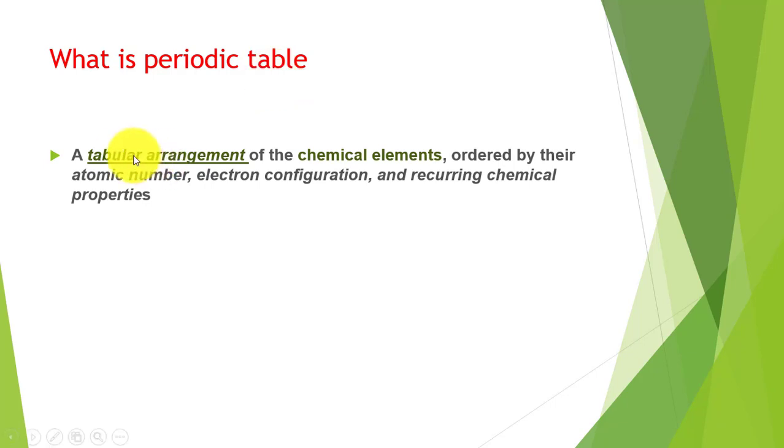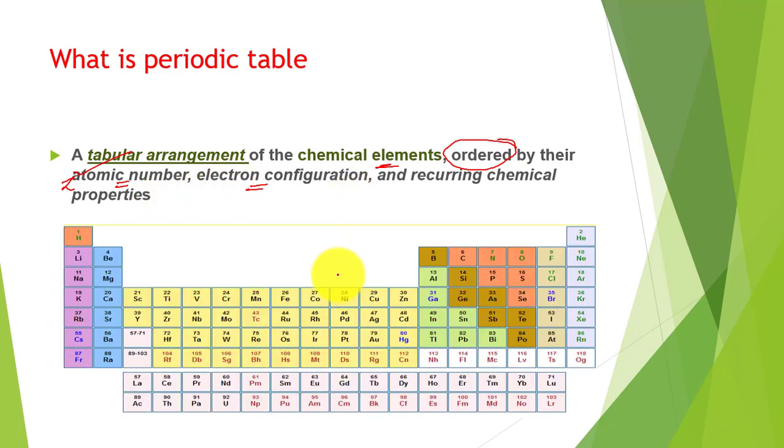What is the definition of periodic table? It is a tabular arrangement of chemical elements and they are ordered - ordered means how they are arranged, what factor was taken - by their atomic number. By now you should know what atomic number is, and electronic configuration. And I hope you know what electronic configuration is, and recurring chemical properties. So it is a tabular arrangement of chemical elements which is ordered by their atomic number, electronic configuration, and recurring chemical properties. This is the modern-day periodic table.